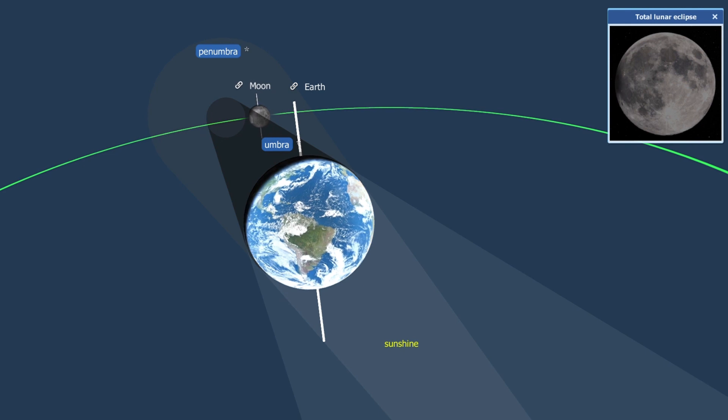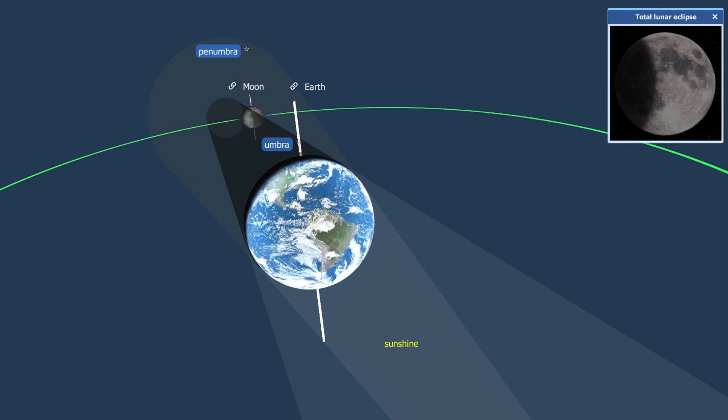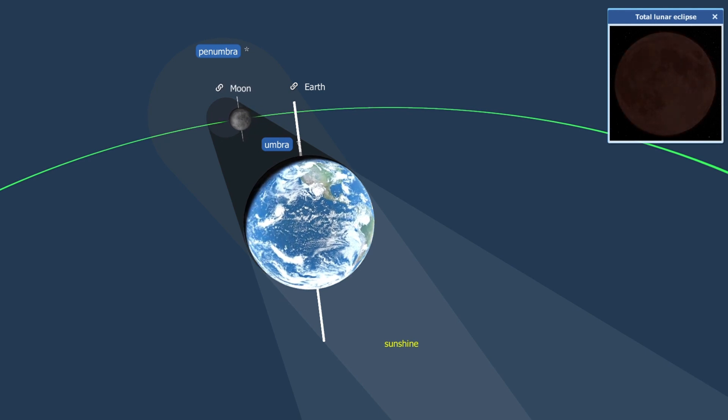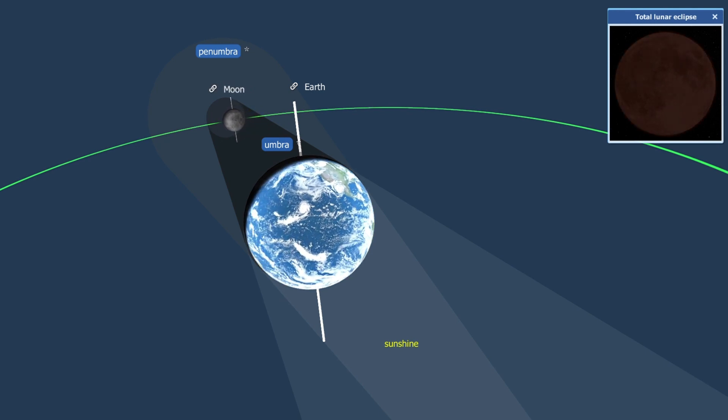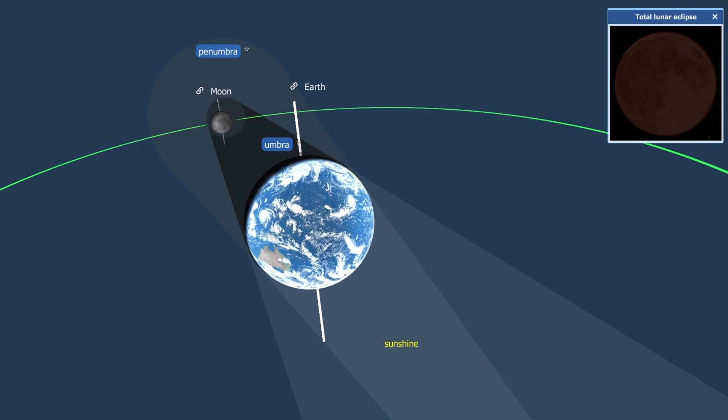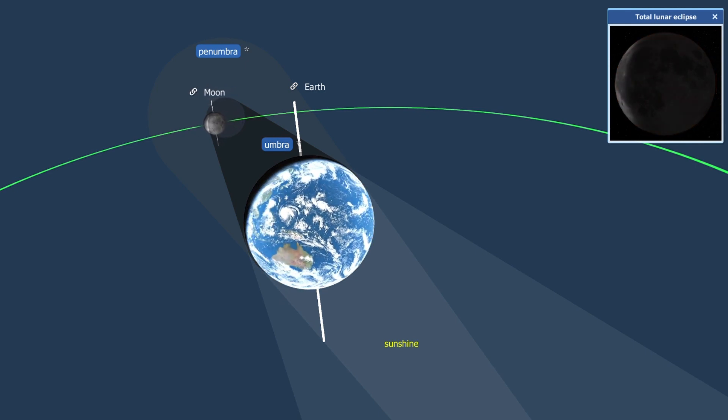Both total and partial lunar eclipses can be observed from the entire nighttime hemisphere of the Earth. The spectacle can last up to 107 minutes. It can take up to six hours between the moment the Moon passes into the Earth's shadow until it leaves.